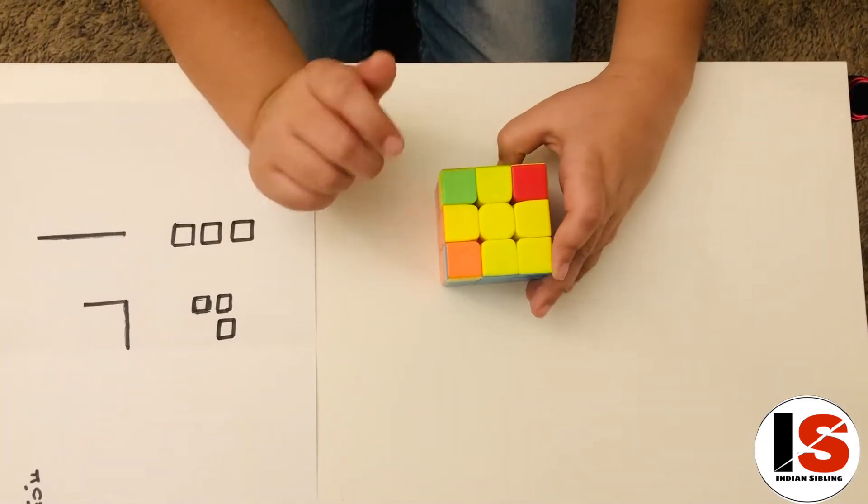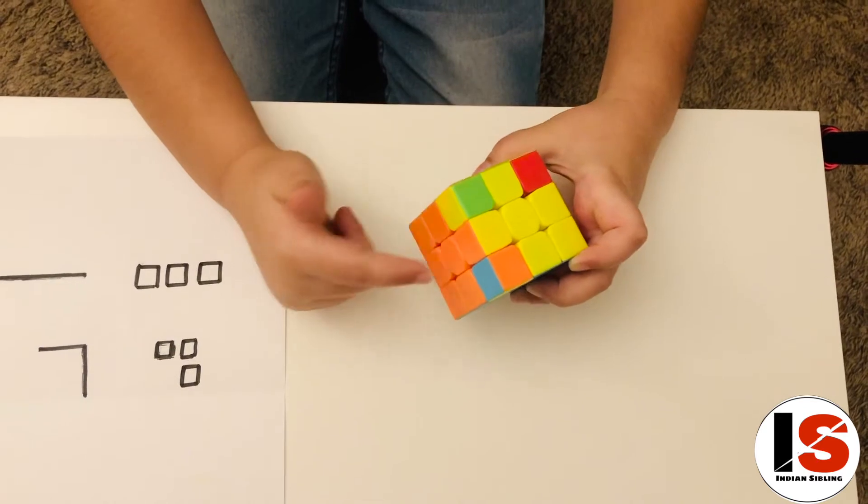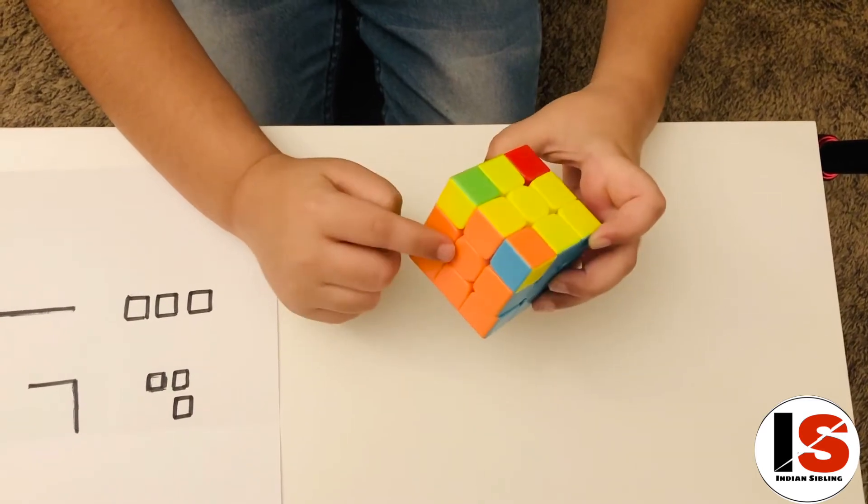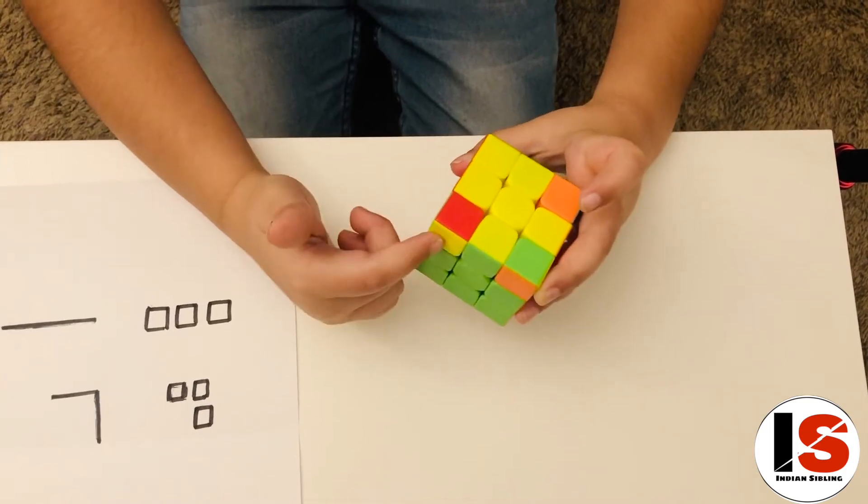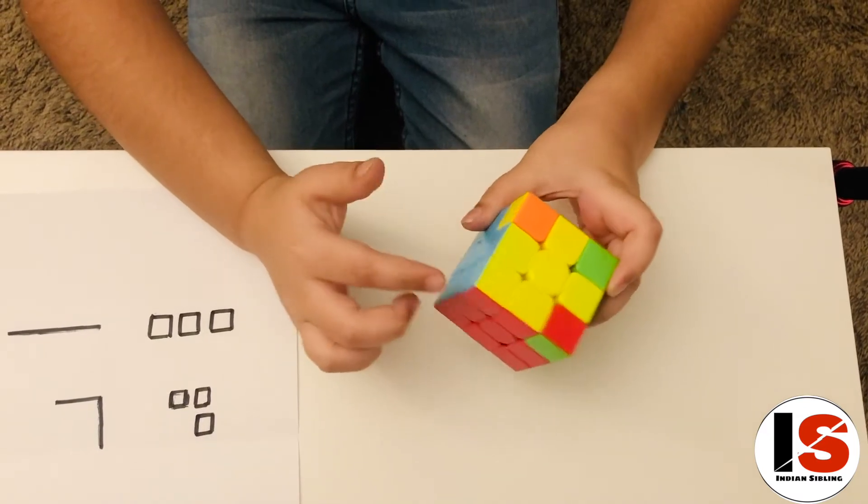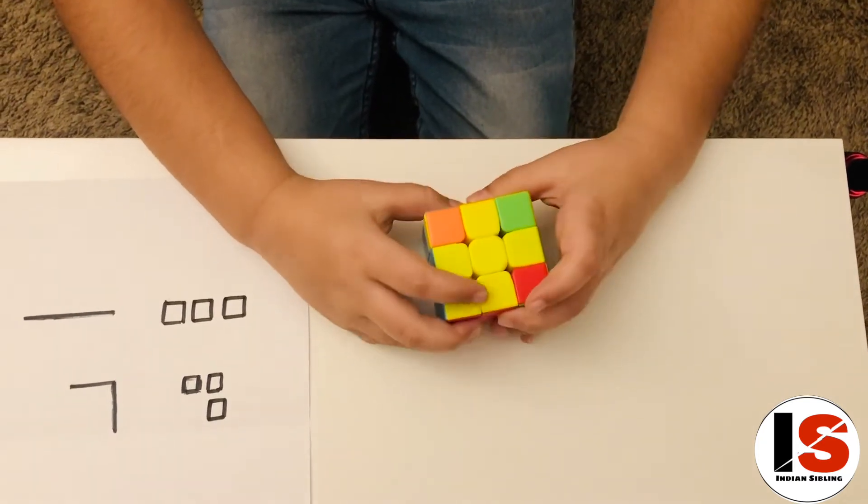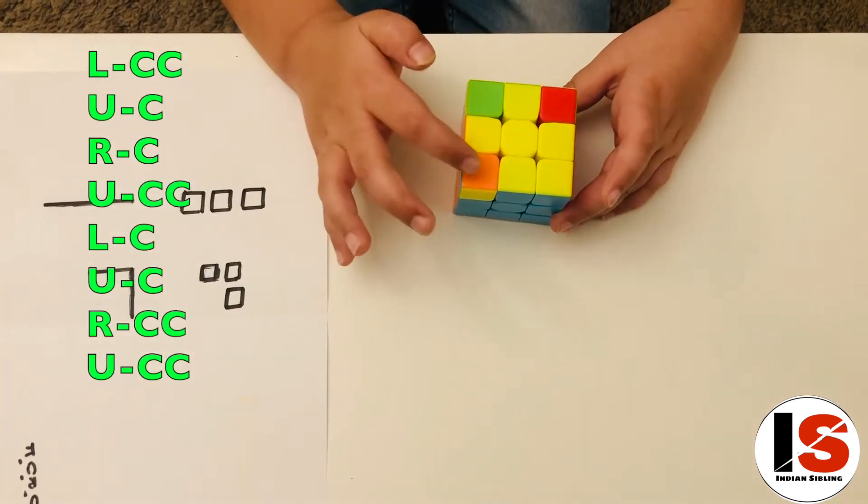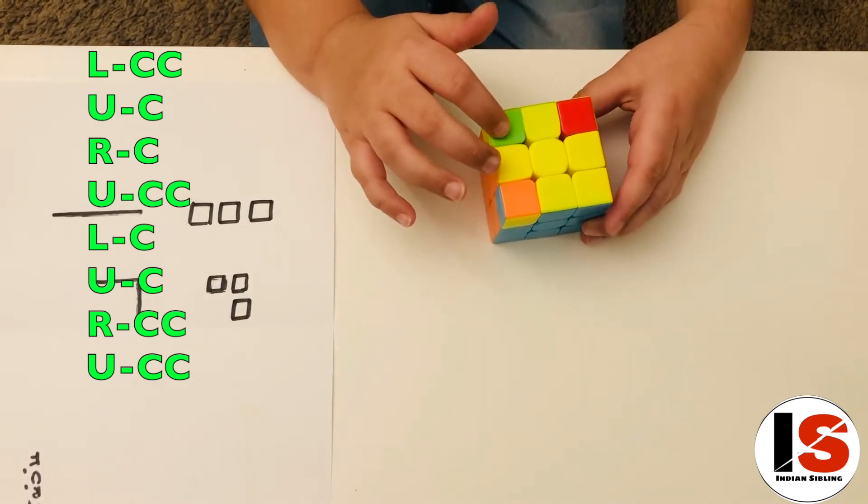The next step is to get the right corner. By that I mean looking at the sides of the color of yellow and then matching it with this. Like, for example, I have a yellow, green, and orange. We have a green and orange here, so that corner is right. Now let's look for another one. We got a red, green, and yellow. We have green and red here. Now we have blue, red. Blue, red. Now we have orange and blue. Orange and blue. Guys, I got lucky that I actually got all the four corners right.